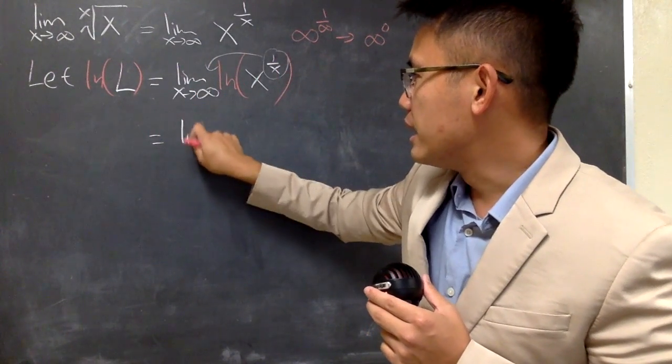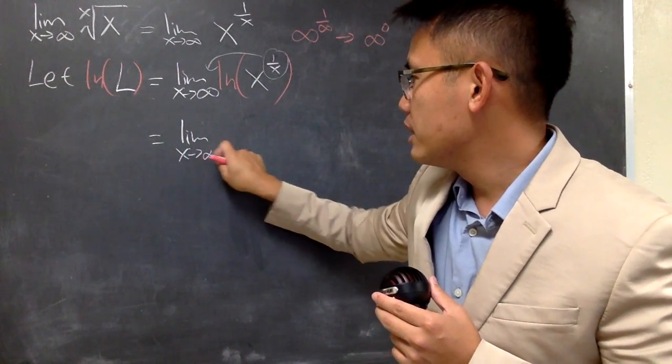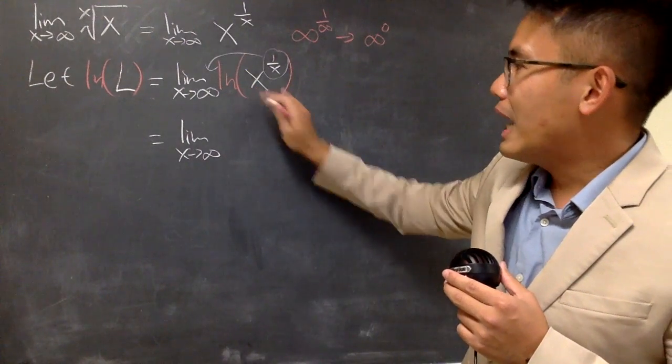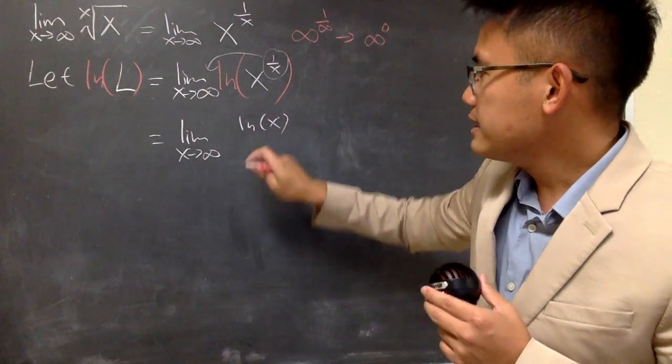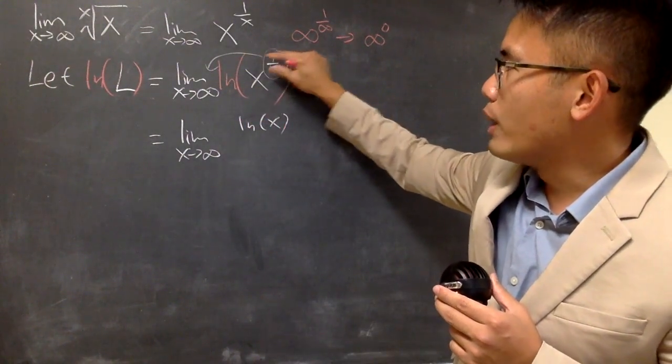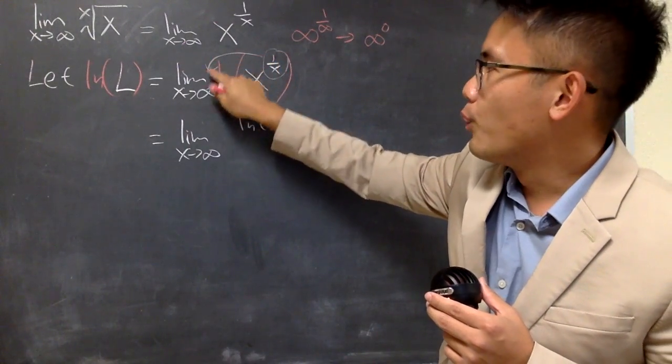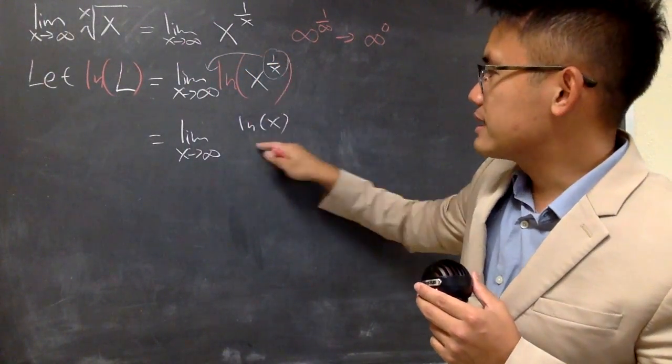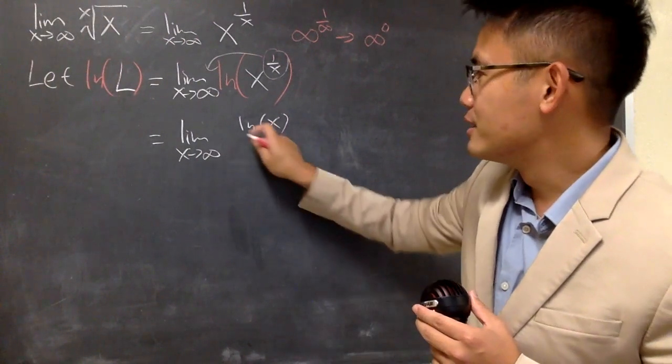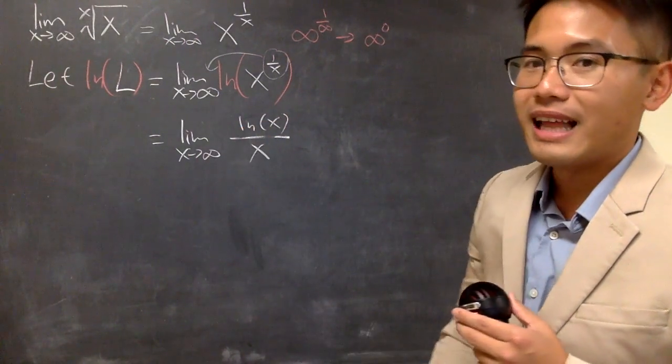Anyway, this right here is the limit as x approaching infinity. Here, we have natural log of x. And, when you have the 1 over x in the front, 1 times this, this is still on the numerator. This x will go down to the denominator. So, we have this over x like that.